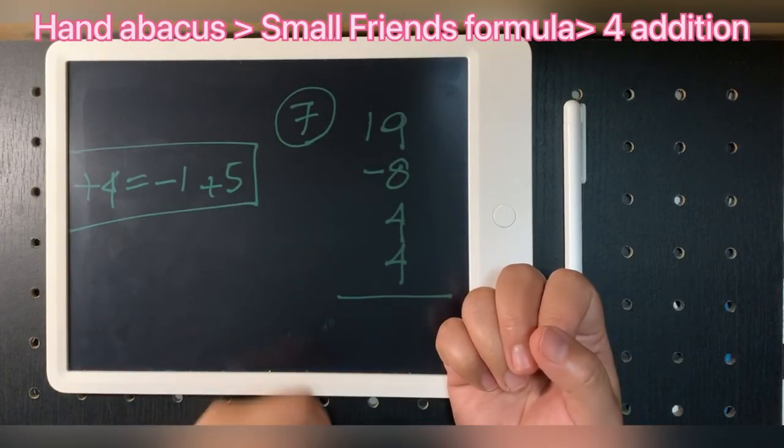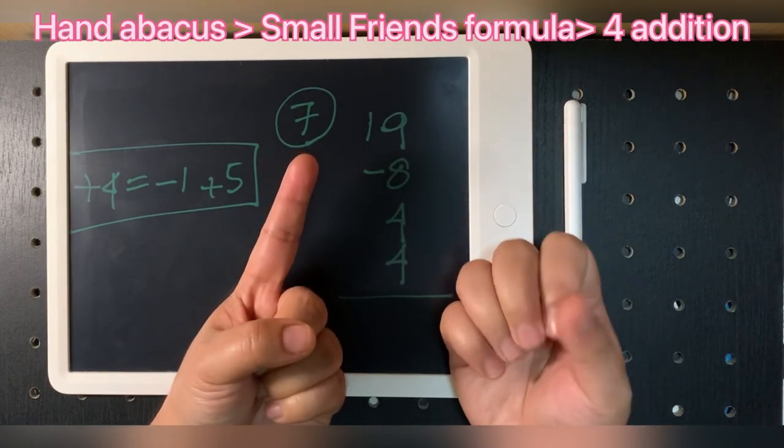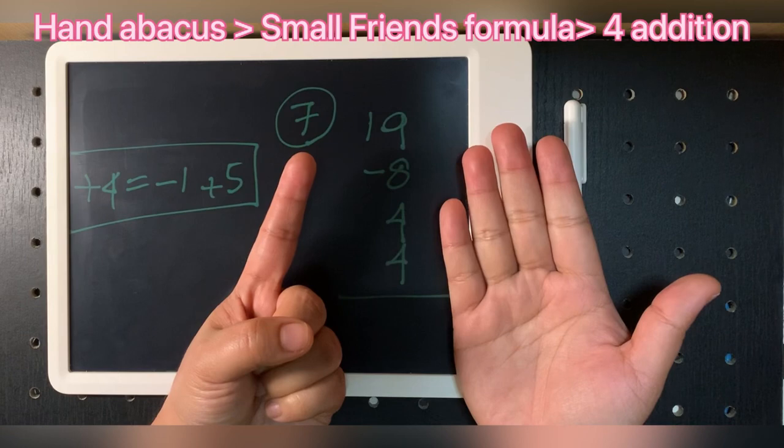Number seven: nineteen, minus eight, plus four, plus four. Answer is nineteen.